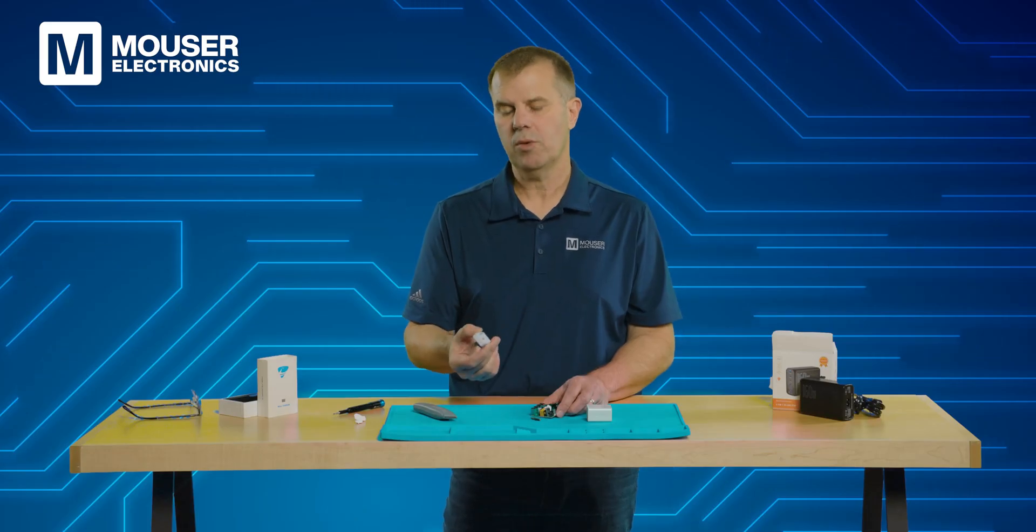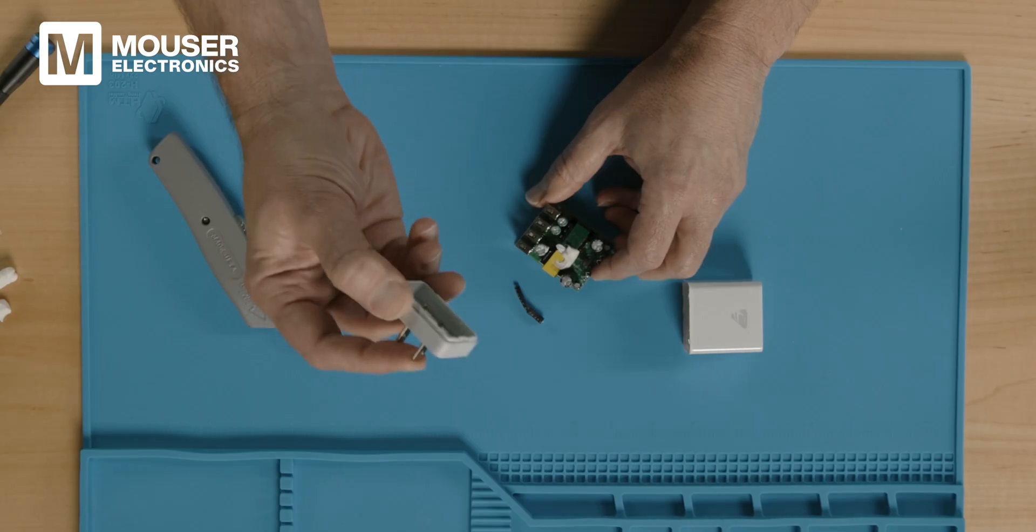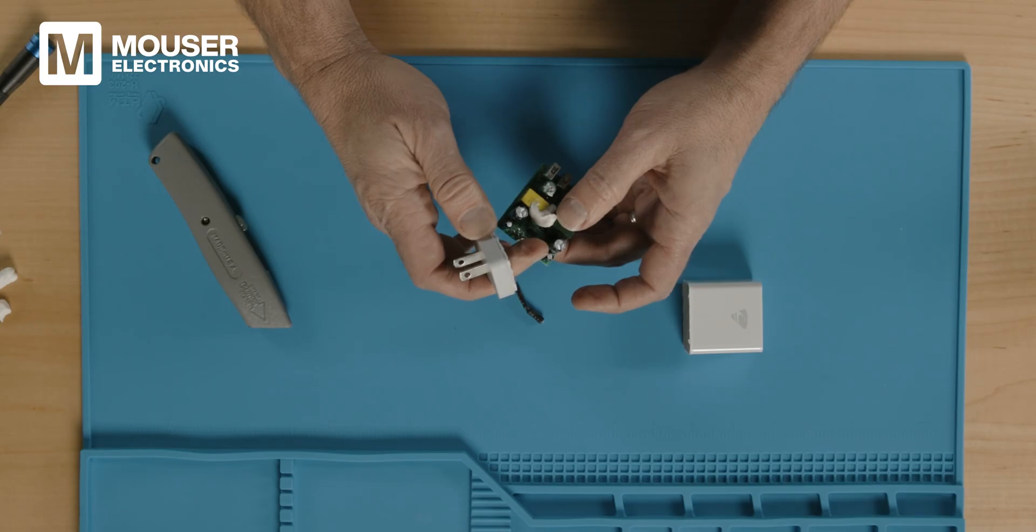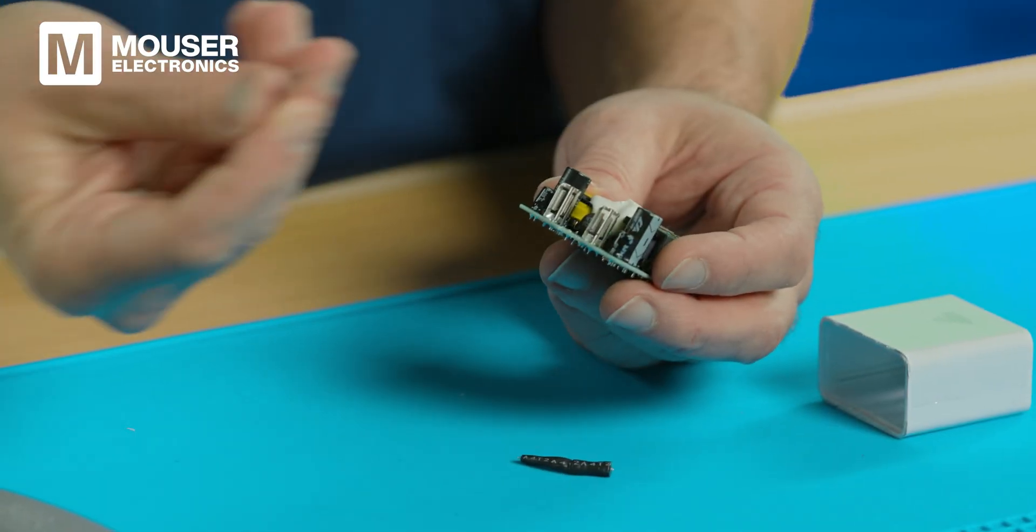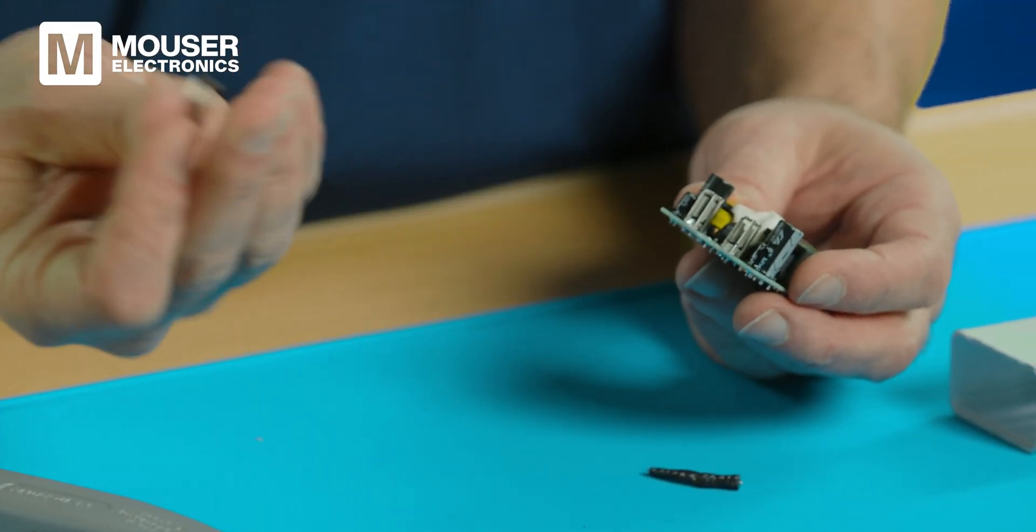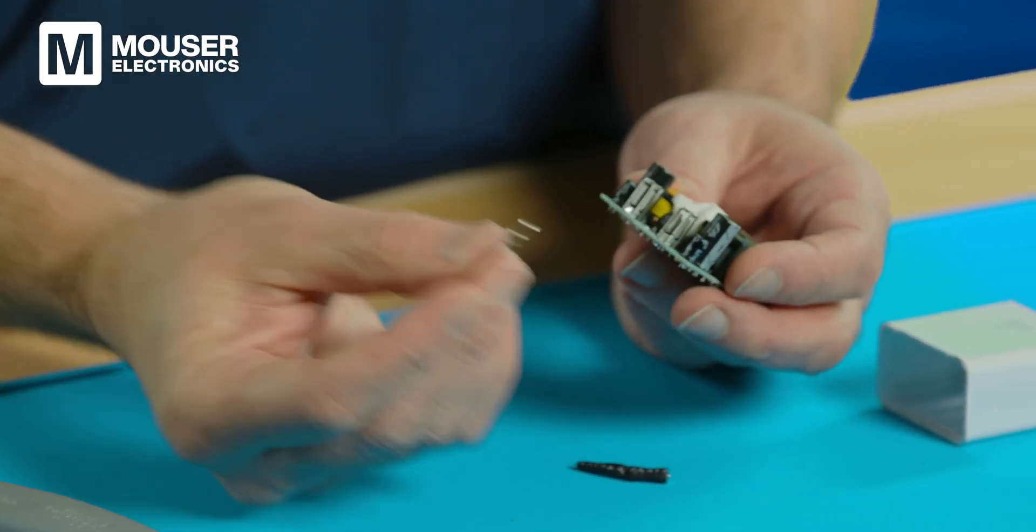And before we finish out this 40 watt charger, I want to pull out one of these power blades and show you how they connect to the connectors on the PCB. All right, I've pulled out one of the power blades that you plug into the wall on this side. And on this side, it was in the case. There's a little bit of a kind of a hilt to this that helps hold it into the plastic case.